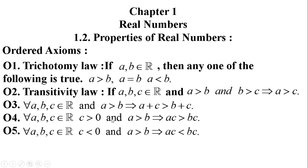Similarly, if we multiply both sides of an inequality by a positive number c, the sign of the inequality does not change. However, if we multiply both sides of the inequality by a negative number — a number less than zero — then the sign of the inequality is reversed. That is, if a > b is multiplied by negative c, it becomes a·c < b·c. These five rules are known as the order axioms of real numbers.